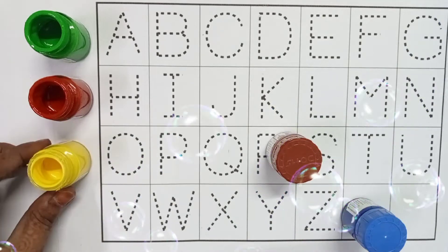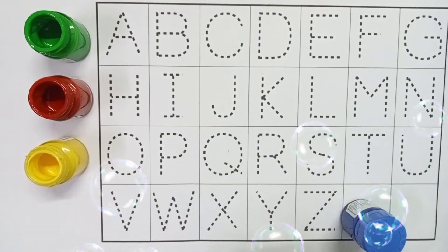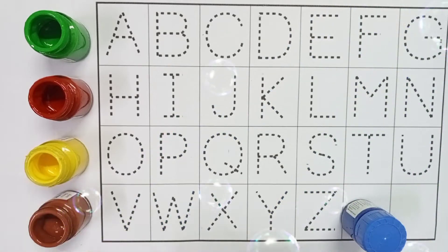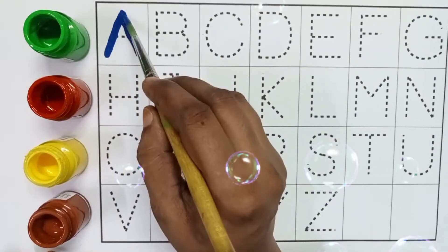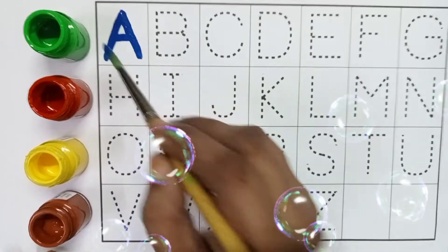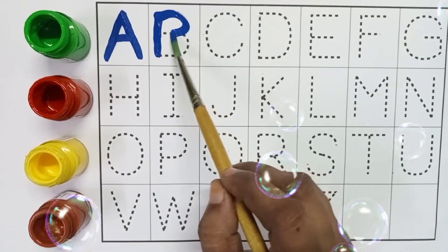Green color, red color, yellow color, brown color. A for apple, apple means... B for bat, bat means balla.